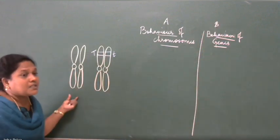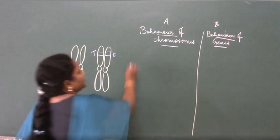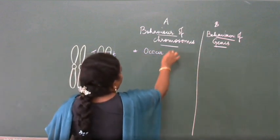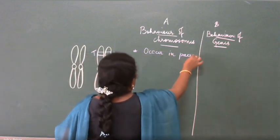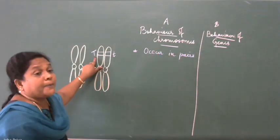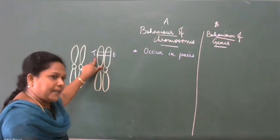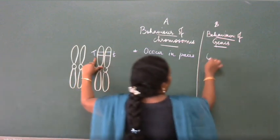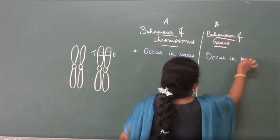So how does this chromosome occur? First point: they occur in pairs. The genes are represented by two alleles, so they also occur in pairs. It is understood that genes also occur in pairs.